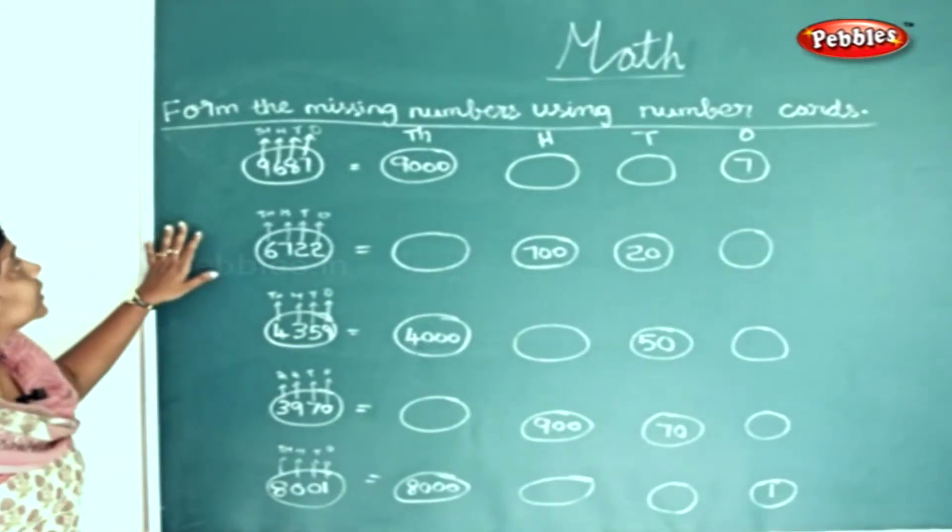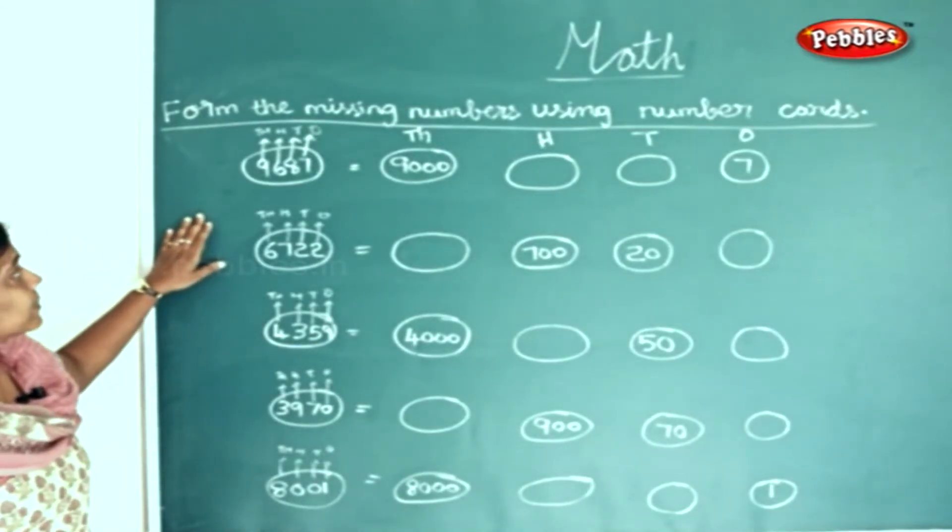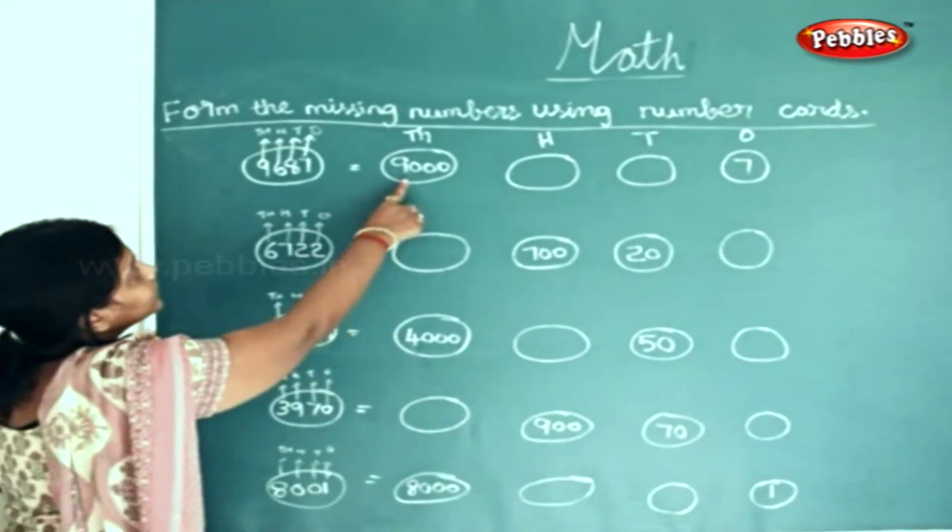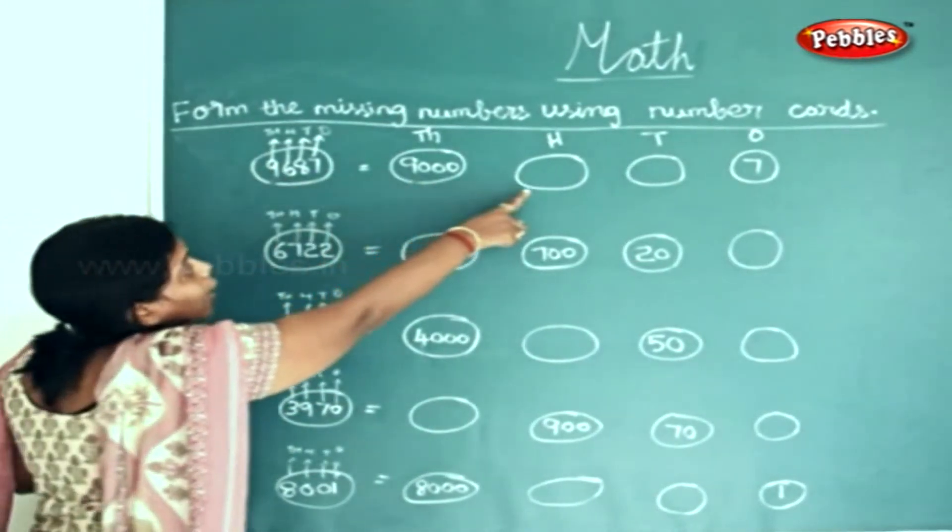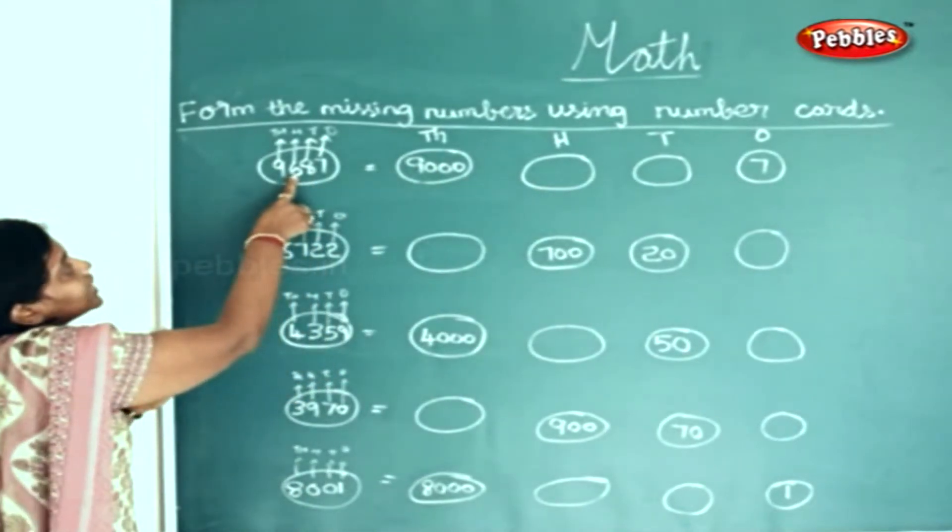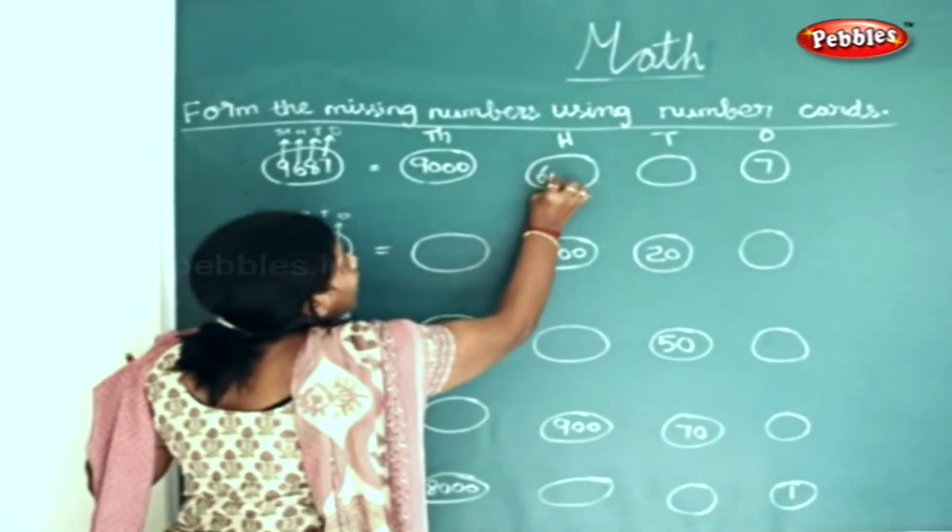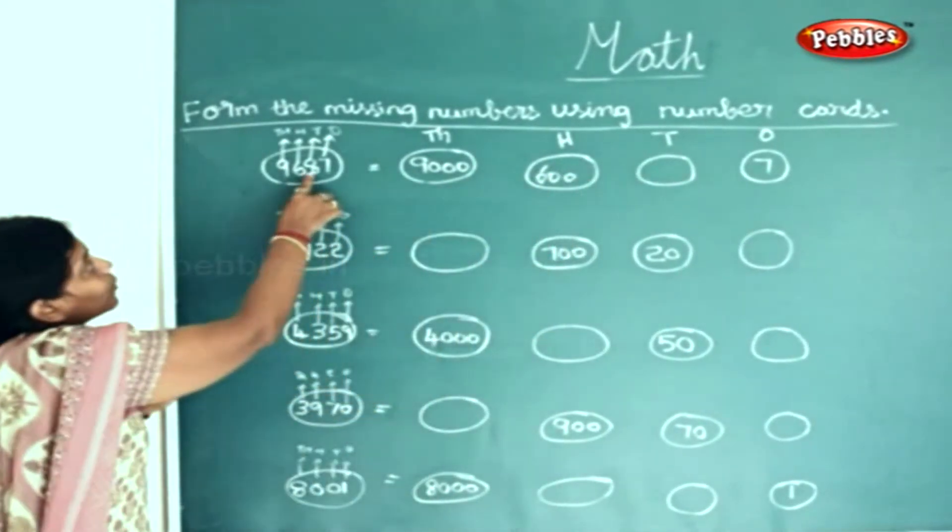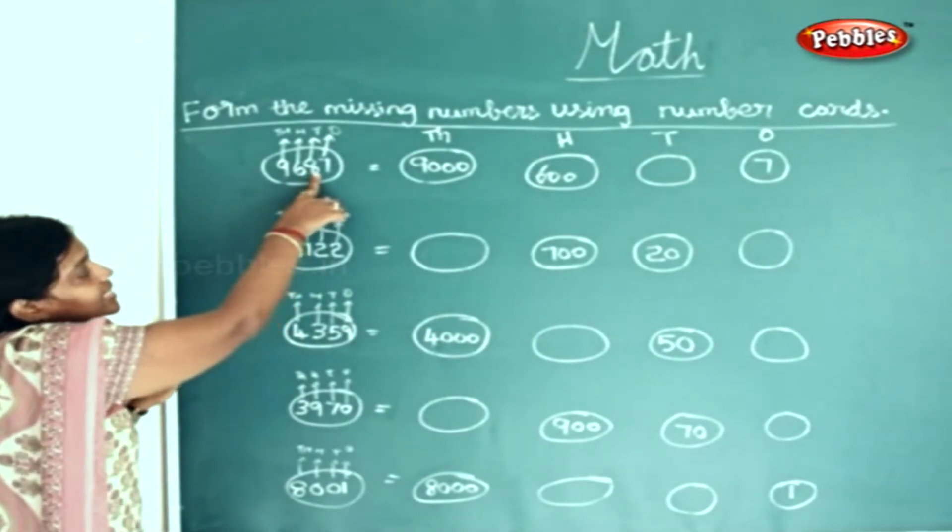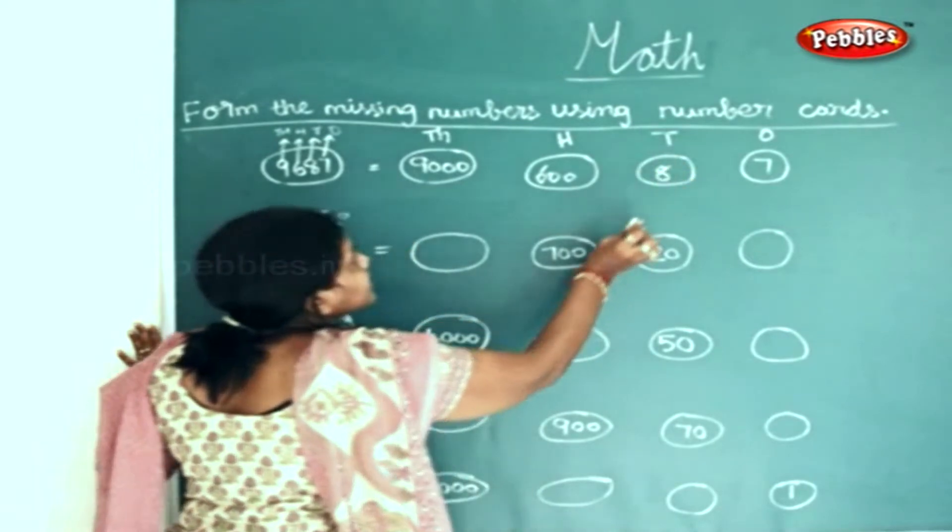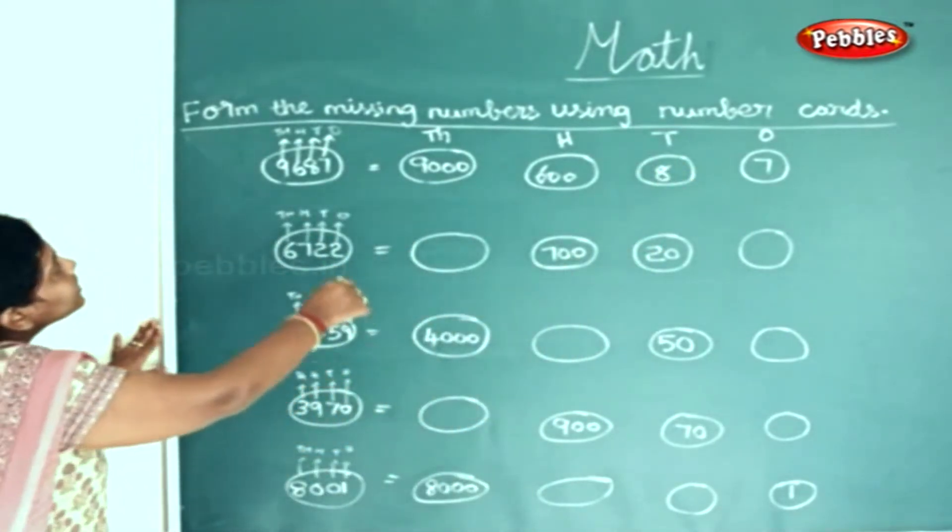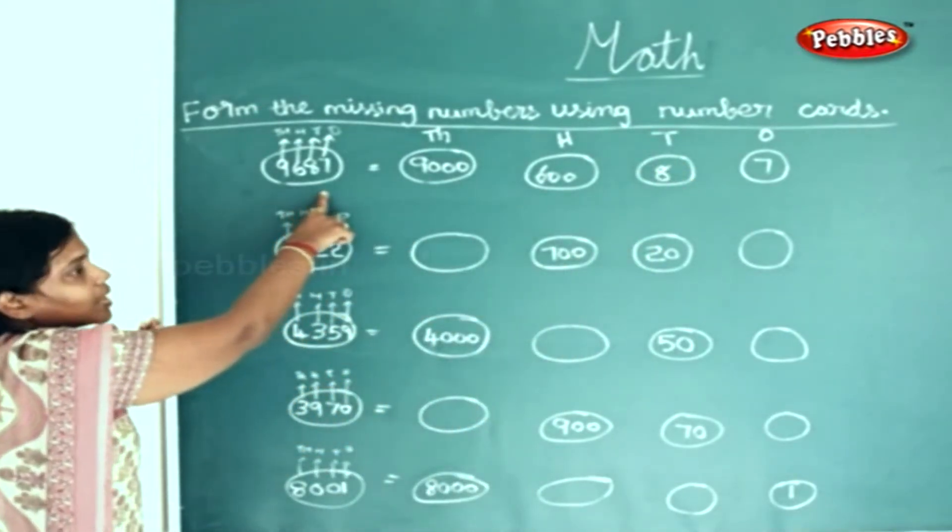Now we will find the missing numbers using number cards. 9 thousands has already been given. 9 thousands are here. How many hundreds? You find 6 hundreds here. How many tens? 8 tens, and 7 ones.